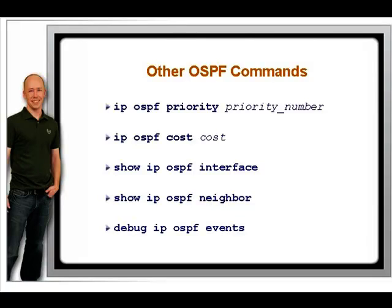For verification, you can use Show IP Protocols and Show IP Route as before. Other commands you can use to verify your configuration are Show IP OSPF Interface, which displays area ID and DR-BDR information, and Show IP OSPF Neighbor, which displays neighbor information. You can also use the Debug IP OSPF Events command to troubleshoot OSPF.